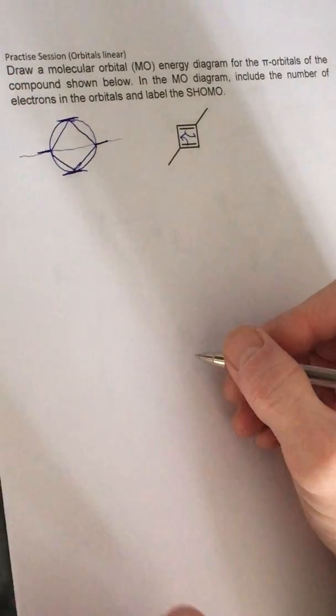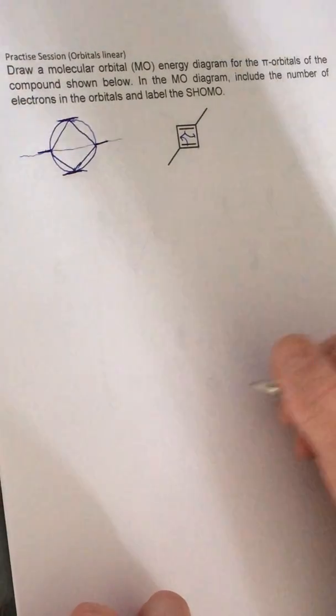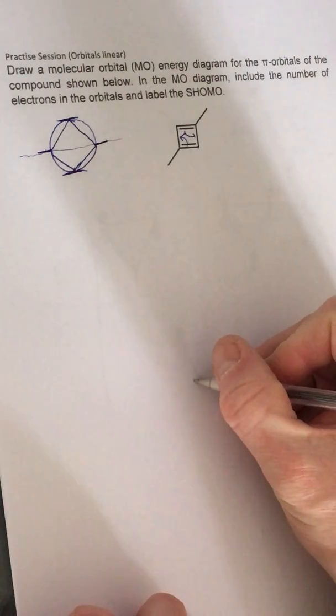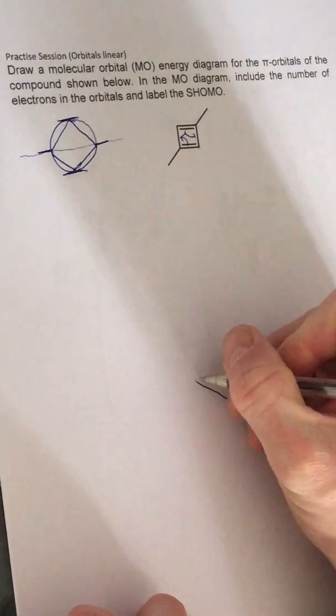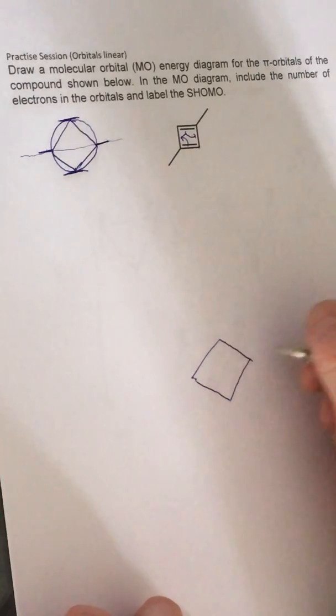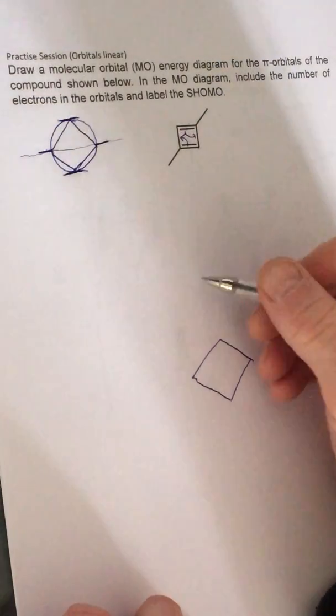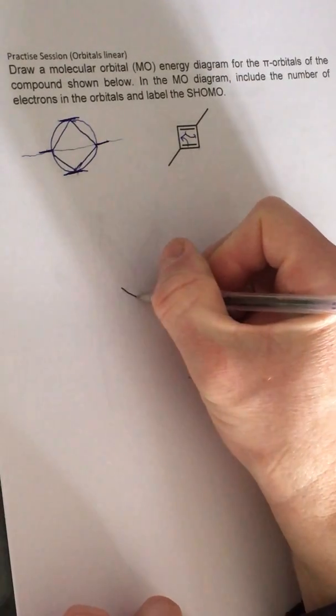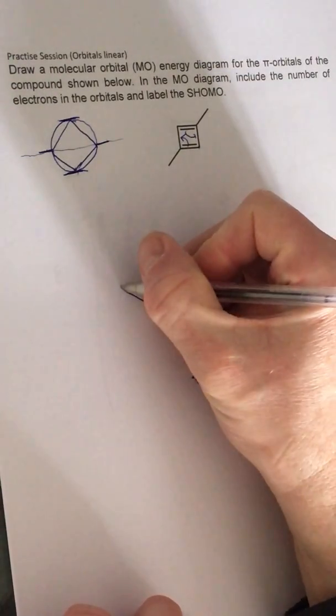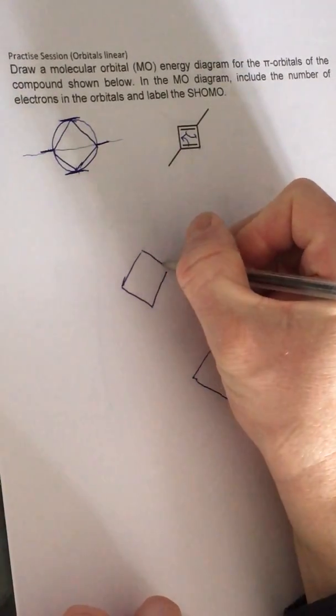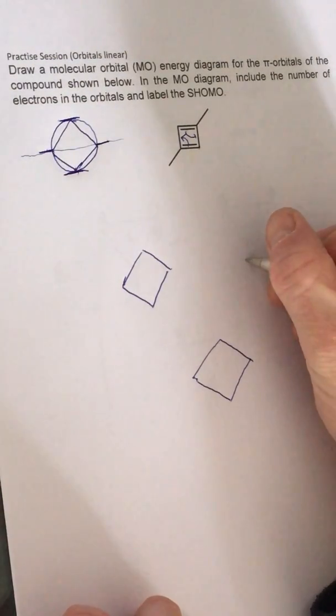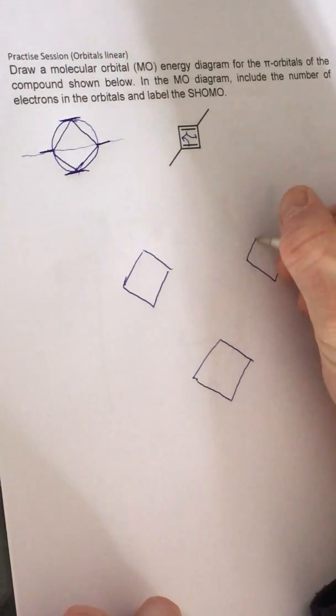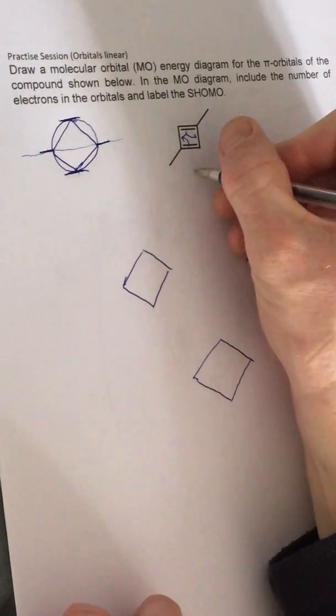But we can lay out our shapes again and put sort of the four squares on their apex in the same arrangement as up there. So we've got one at the bottom, one at the bottom, and then two at the same energy level.